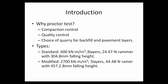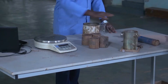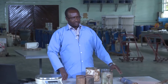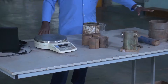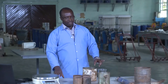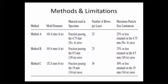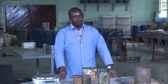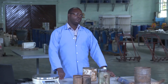Depending on the maximum particle size, we are going to use different molds. This small mold has a diameter of around 10 centimeters, whereas this one has a diameter of around 15 centimeters. There are mainly three methods. Method A uses material with a maximum size of 4.75 millimeters, where the oversize of 9.5 millimeters can be up to 25 percent.